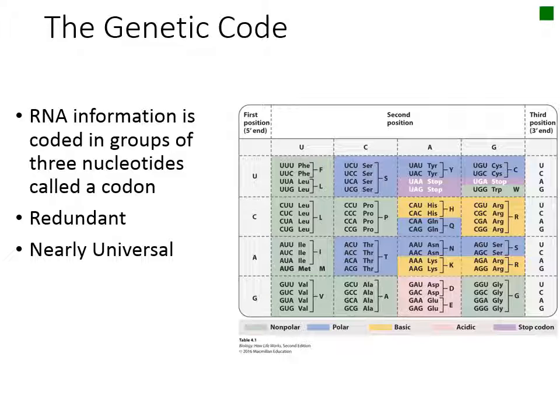Instead, the genetic code is read in groups of three nucleotides at a time. Groups of three nucleotides are called a codon, and each codon corresponds to one amino acid. This can be seen in this table called a codon chart.